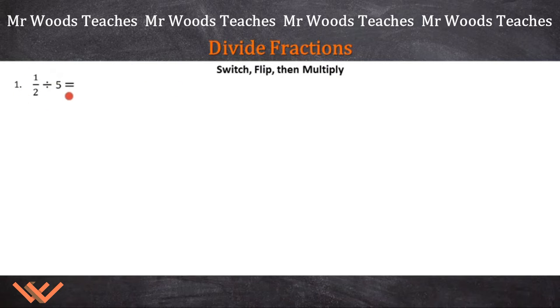So one thing we can do is we can rewrite this problem to look like this. Notice what I did. So 1 half divided by 5 over 1. That's just 5. It's still a fraction, but it makes it easier to understand when we switch, flip, then multiply.